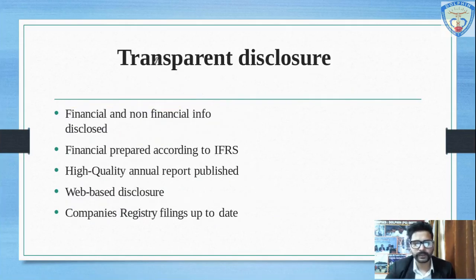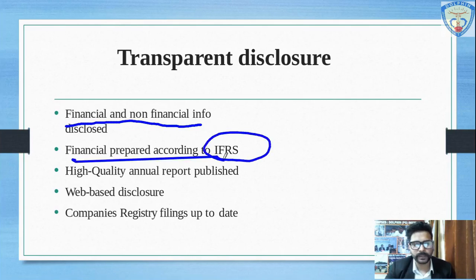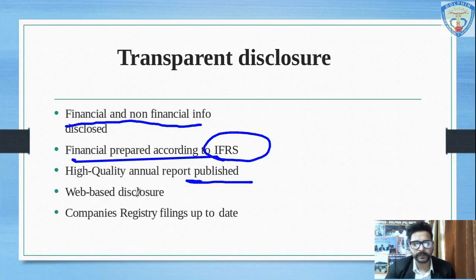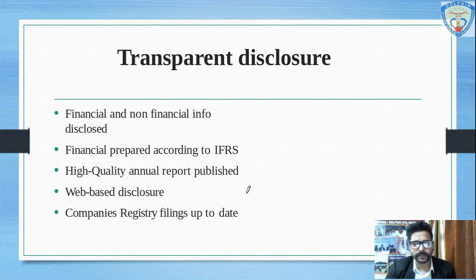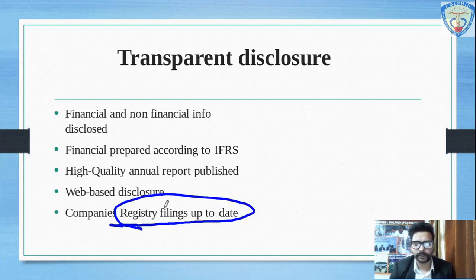Good corporate governance also requires transparent disclosure in terms of financial and non-financial information, where financials must be prepared in accordance with the IFRS — that is, the International Financial Reporting System. It also consists of a high-quality annual report to be published in newspapers and on the organization's website. Web-based disclosure means it must be disclosed on the organization's website, and the company's registry filing should be up to date, meaning its incorporation should be current.